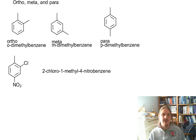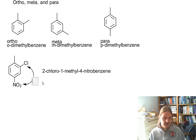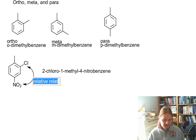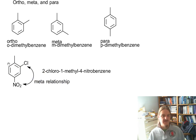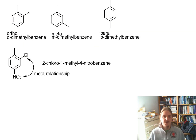Even though we can't use ortho, meta, and para in the name itself, ortho, meta, and para can still be used to refer to the relationship between two functional groups. So the relationship here is meta between the chlorine and the nitro. We can't use meta to describe the name of the compound, but we can say there is a nitro group meta to the chloro group.